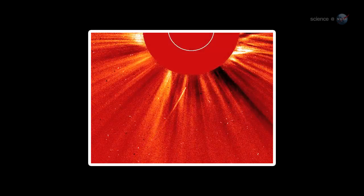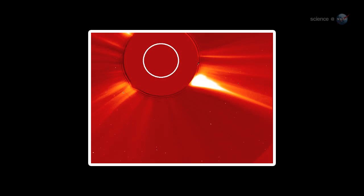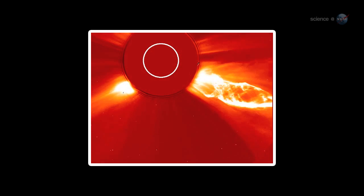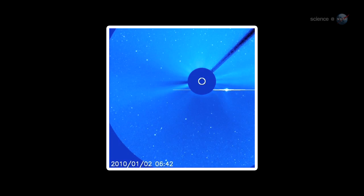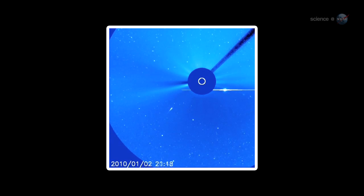Sungrazing comets aren't a new thing. In fact, the Orbiting Solar and Heliospheric Observatory, SOHO, watches one fall toward the Sun and evaporate every few days. These frequent kamikaze comets are thought to be splinters of a giant comet that broke apart hundreds of years ago. Typically, they measure about 10 meters across. Small, fragile, and easily vaporized by solar heat.